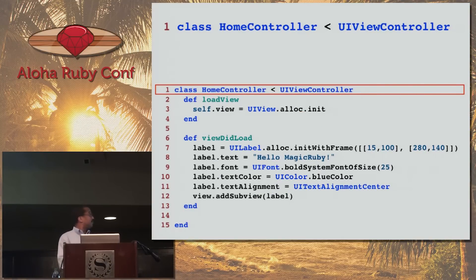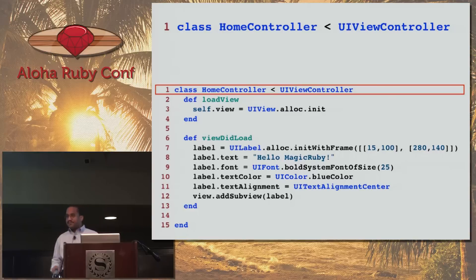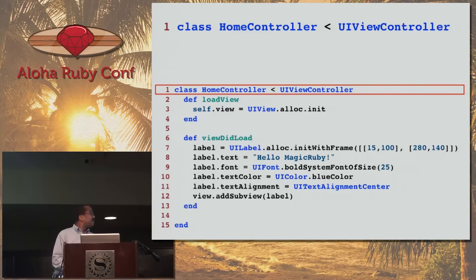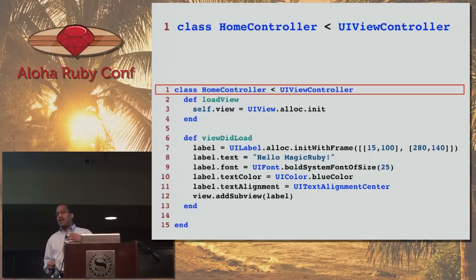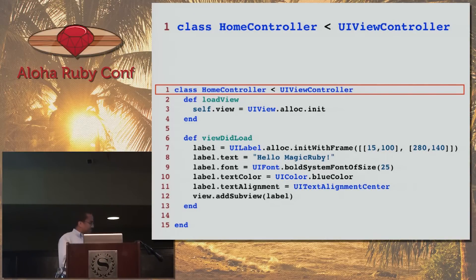The home controller is an instance of UIViewController. RubyMotion and Objective-C both use the model-view-controller paradigm. A view controller is what we in Rails would consider a controller. There are models, views, and view controllers — what we would consider a controller in Rails is a view controller in RubyMotion.